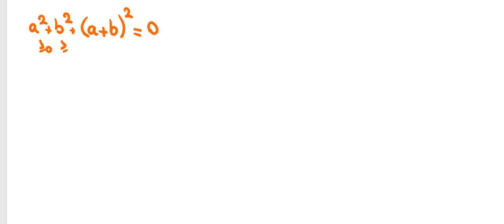These are real numbers. Each term is at least 0. So, if we have their sum equal to 0, then we can conclude each term equals 0. So, A is 0, B is 0, A plus B is 0. We conclude A should equal B equals 0.